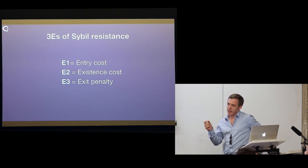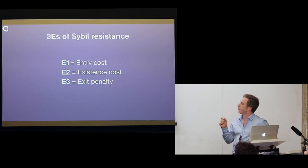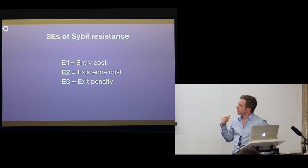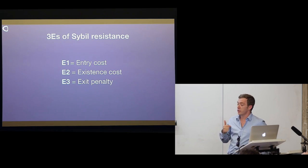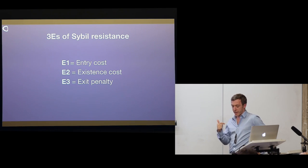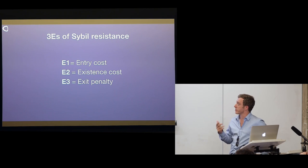There are three E's of Sybil resistance. Number one: entry cost — how much does it cost for your node to enter the network? Number two: existence cost — how much does it cost for your node to stay in the network? Number three: exit penalty — can the node be kicked out? You can evaluate the Sybil resistance of any ID using these criteria. The third one, exit penalty, is less well known but important because you can make the adversary face potentially unbounded costs.